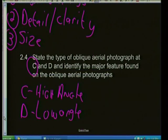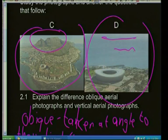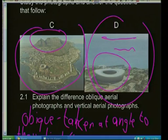Just as a matter of interest: identify the major feature found on the oblique photographs. The famous Table Mountain — that feature there is Table Mountain. And this was famous for the World Cup — that's your Cape Town Stadium. Very rarely will they be more particular like that in questioning you, but it's nice to have out of interest.